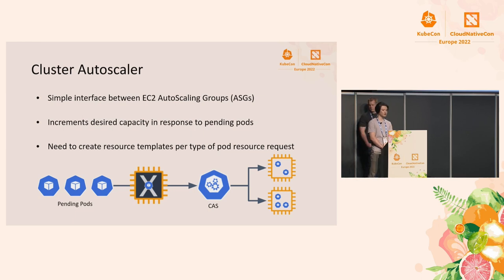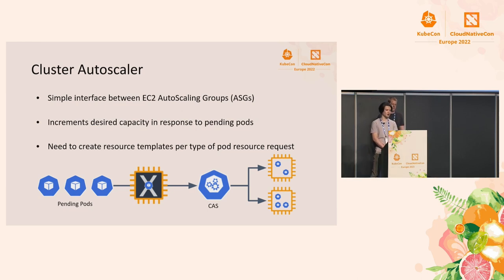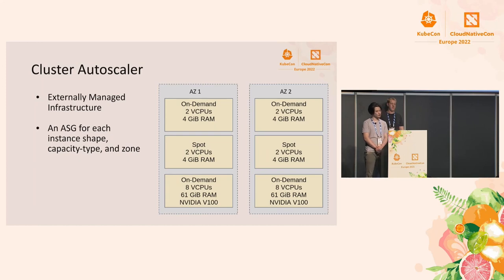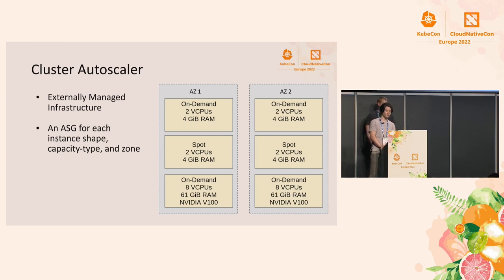For AWS, Cluster Autoscaler is a simple interface between EC2 autoscaling groups. It looks at existing pods in the cluster, and if they can't schedule to the existing nodes, it will increment desired capacity for the associated ASGs you have configured. Cluster Autoscaler uses externally managed infrastructure. If you have a lot of different capacity type requests, availability zones, and instance shapes, you could end up with six different ASGs. That leads us to something else we'd like to talk about: Karpenter.